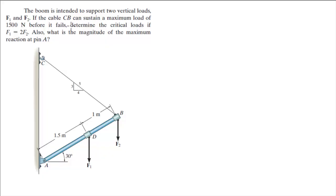Alright guys, let's do this problem where you have a boom extended to support two vertical loads, F1 and F2. If the cable CB can sustain a maximum load of 1500 N before it fails, find the critical loads if F1 equals 2F2. Also, what is the magnitude of the maximum reaction at pin A?